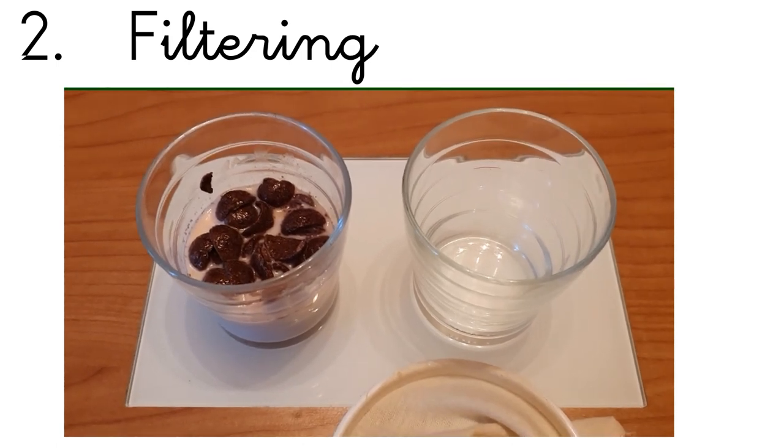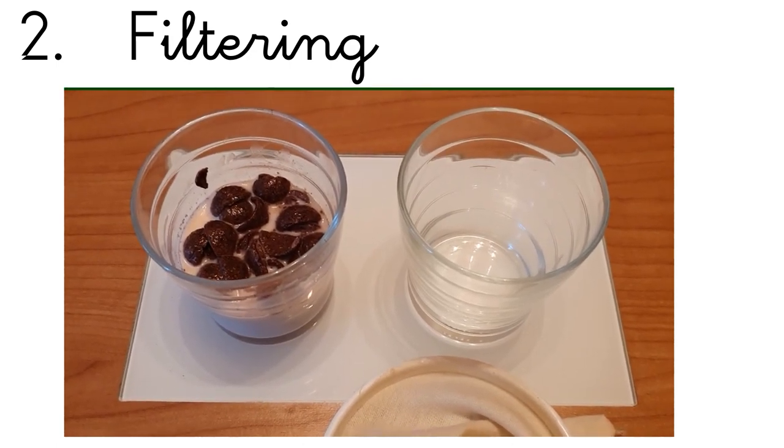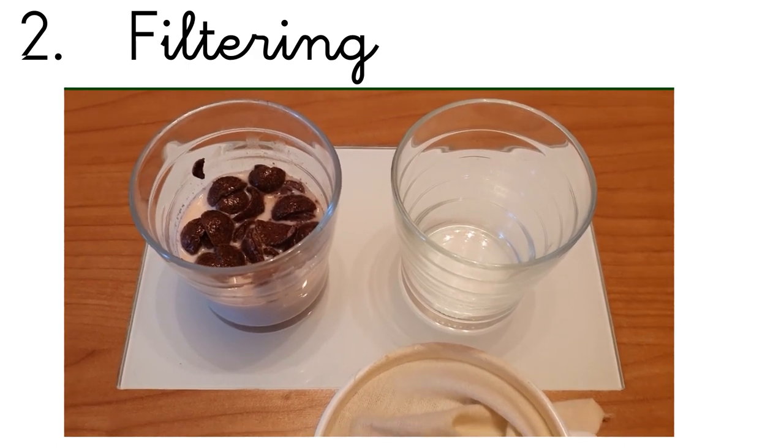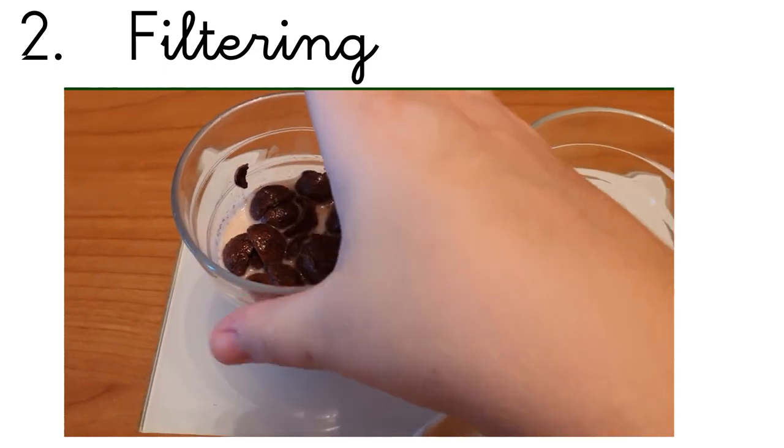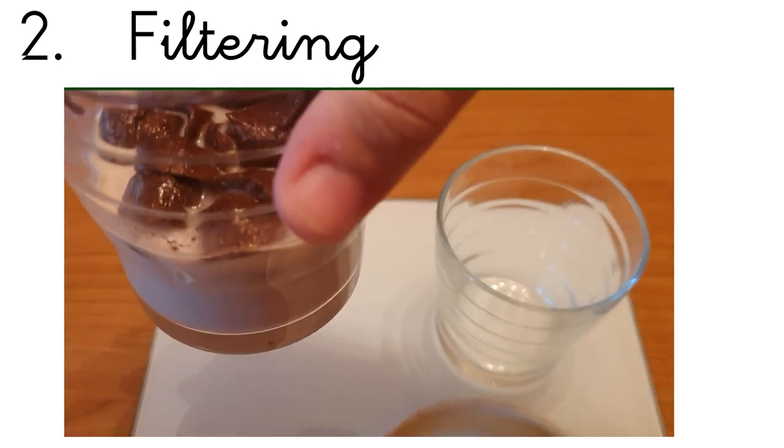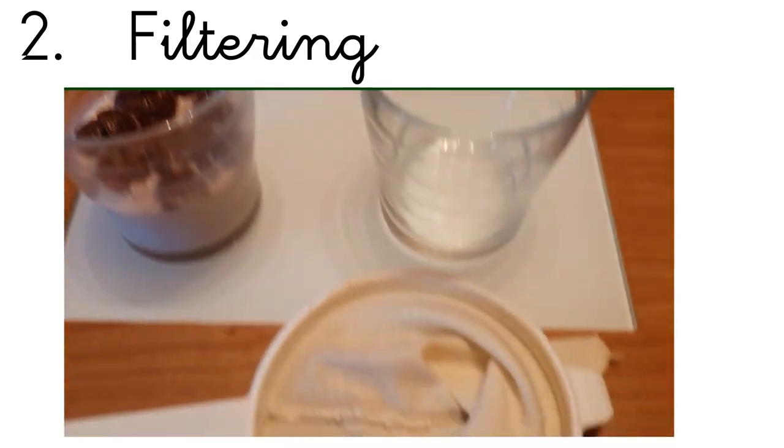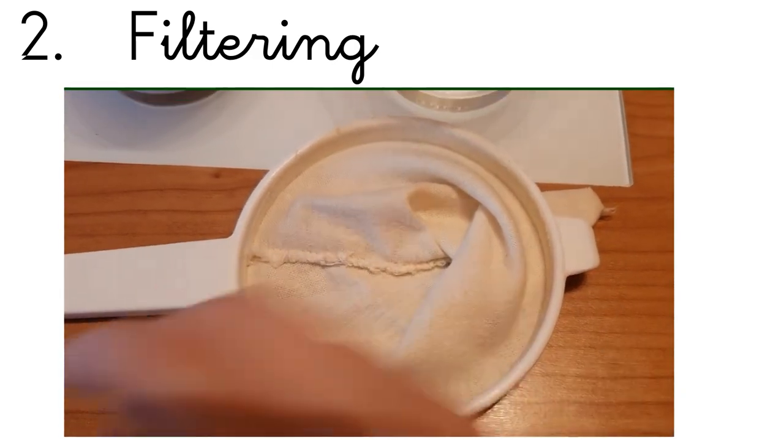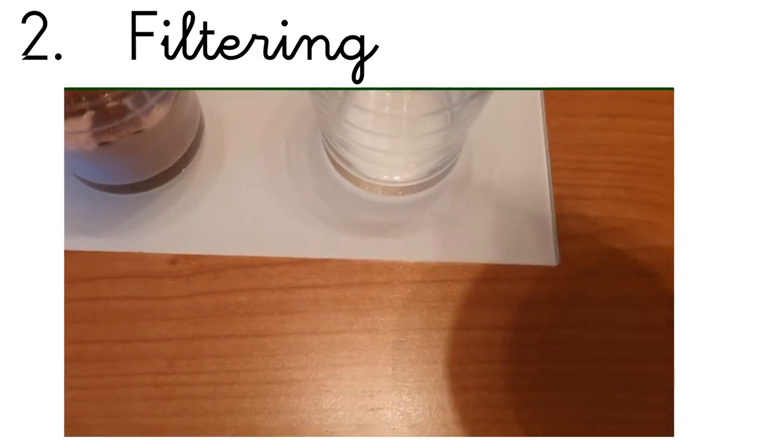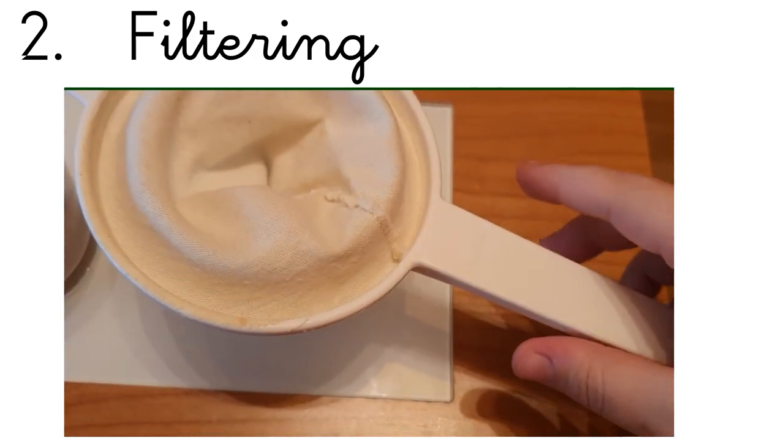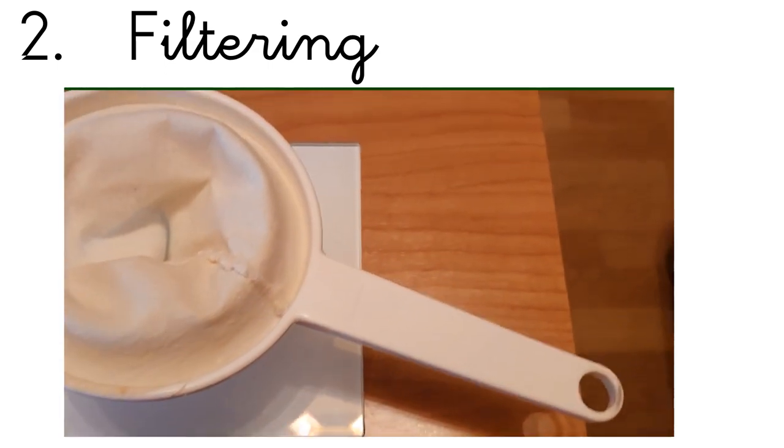Hi! Now I'm going to explain the process of filtering. This is good for separating solids from liquids. So in this glass we've got chocolate milk and cereals and we are going to use a filter. So we put the filter onto another glass and now we just have to put it inside.